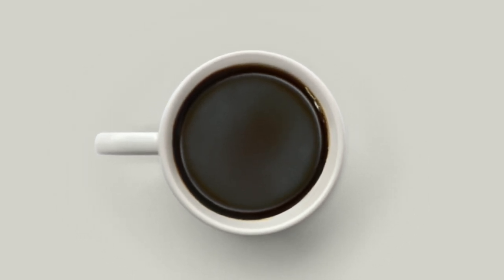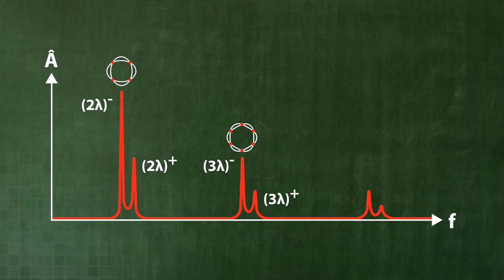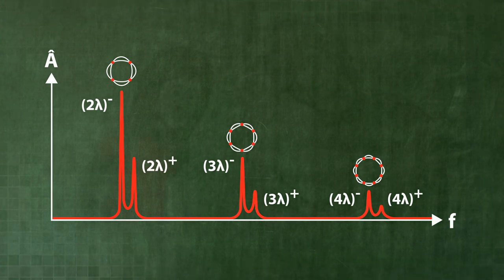We have thus explained the spectrum of the cup. We can create double peaks with two times, three times, and with some effort, even four times the wavelengths. Try it out.